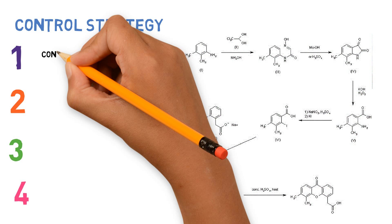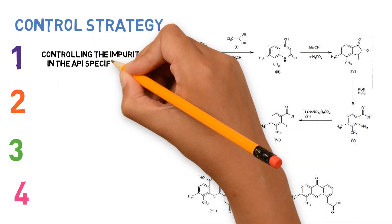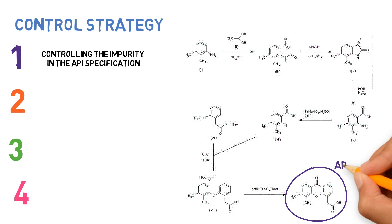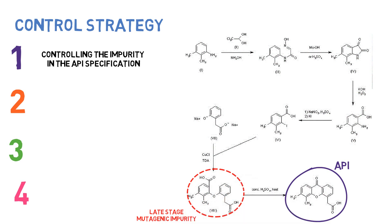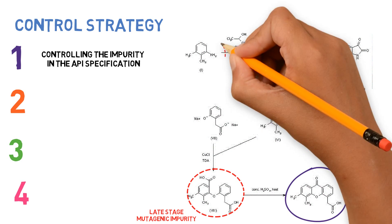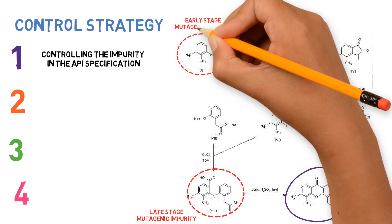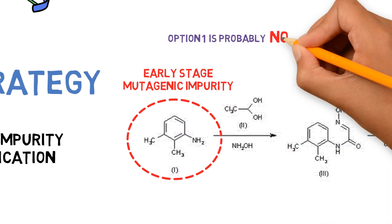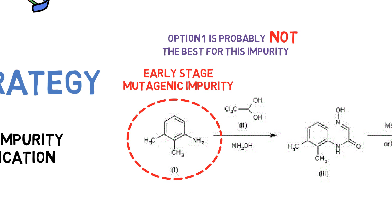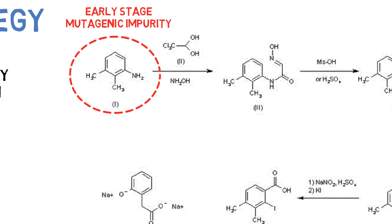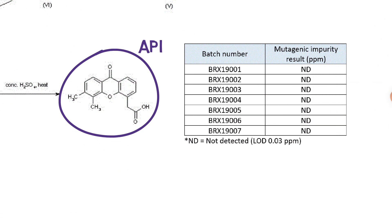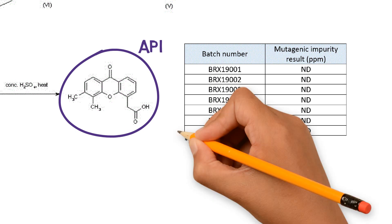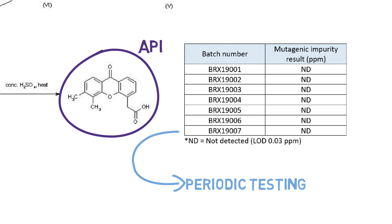Option 1: Controlling the mutagenic impurity in the API specification. This is recommended especially when the impurity is generated late in the process and there is no possibility of establishing a control in an intermediate stage or a safe purge factor. However, when impurities arise from earlier stages, this would not be the best option because we would only find out if the impurity is below the limit when we already have our final API. When absence has been shown in consecutive batches, it may be appropriate to establish periodic testing rather than routine testing.